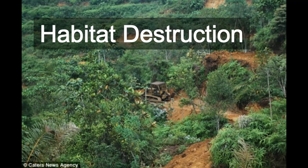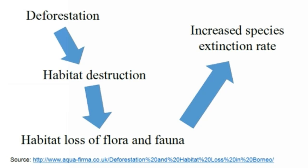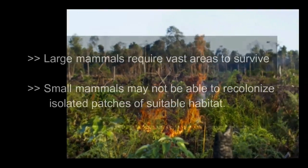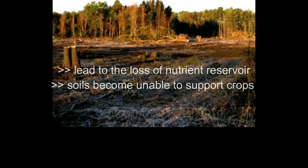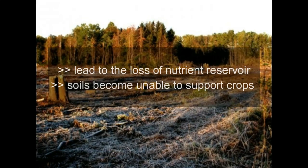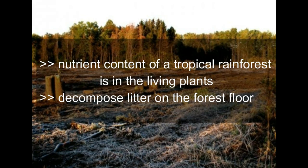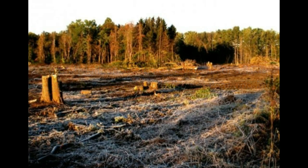The fifth effect of deforestation is habitat destruction. Deforestation causes habitat destruction and leads to habitat loss of flora and fauna, which increases the species extinction rate. Large mammals require vast areas to survive, whereas small mammals may not be able to recolonize isolated patches of suitable habitat. Deforestation also leads to loss of nutrient reservoir, and the soil usually becomes unable to support crops in just a few years. Nearly all the nutrients of a tropical rainforest are contained in the living plants and the decomposing litter on the forest floor.